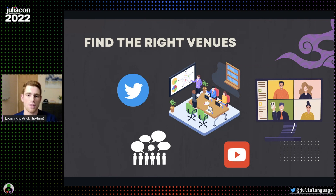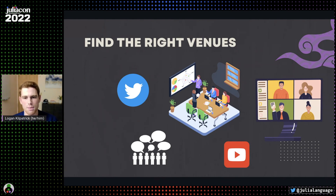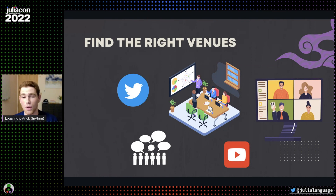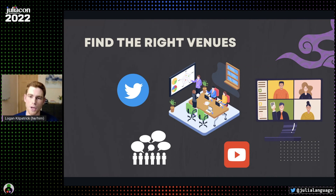Finding the right venues means asking: what are the right venues for the specific audience you're interested in connecting with? These days, a lot of technical conversations are on Twitter and YouTube and other platforms. But if you're targeting, say, material scientists who should really be benefiting from Julia, spend some time thinking about where are the right venues to actually reach that specific audience. Maybe it's some domain-specific conference in that area — that's really going to be the most successful place for you to go in and advocate for Julia. Keep that in mind as you explore different options for where you can present this information.